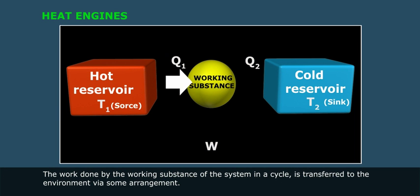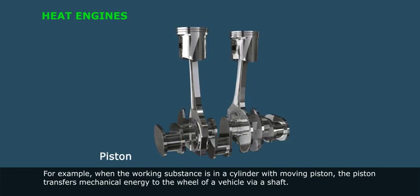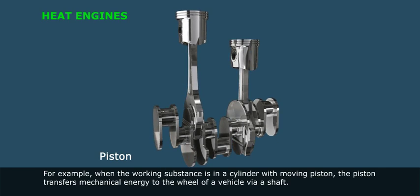The work done by the working substance of the system in a cycle is transferred to the environment via some arrangement. For example, when the working substance is in a cylinder with moving piston, the piston transfers mechanical energy to the wheel of a vehicle via a shaft.